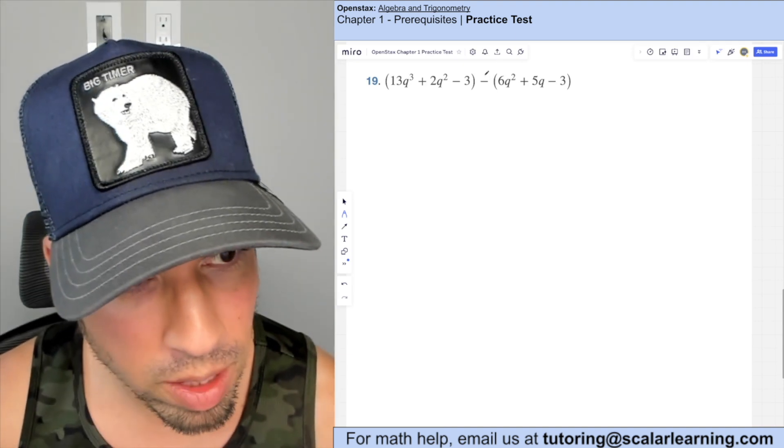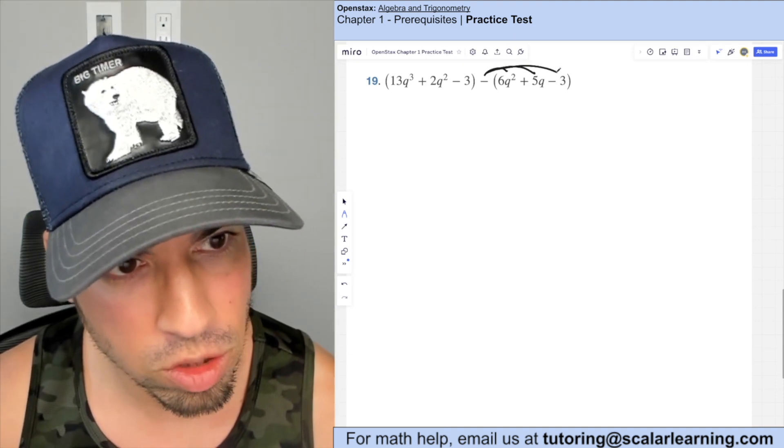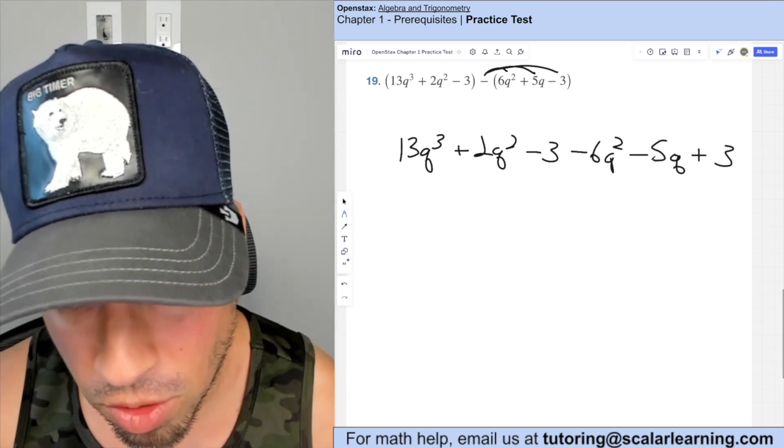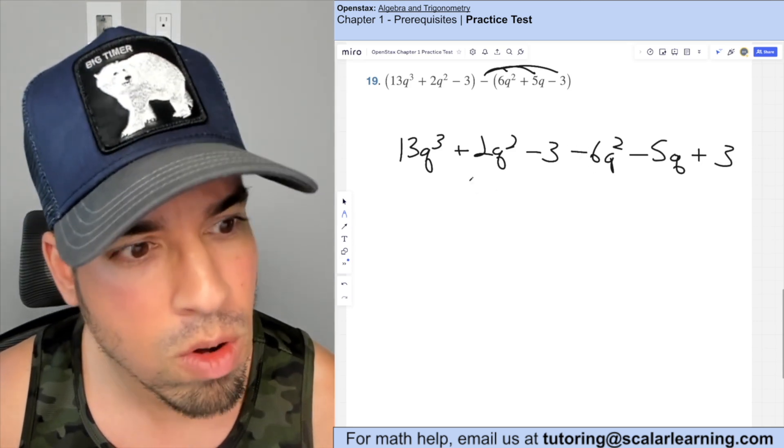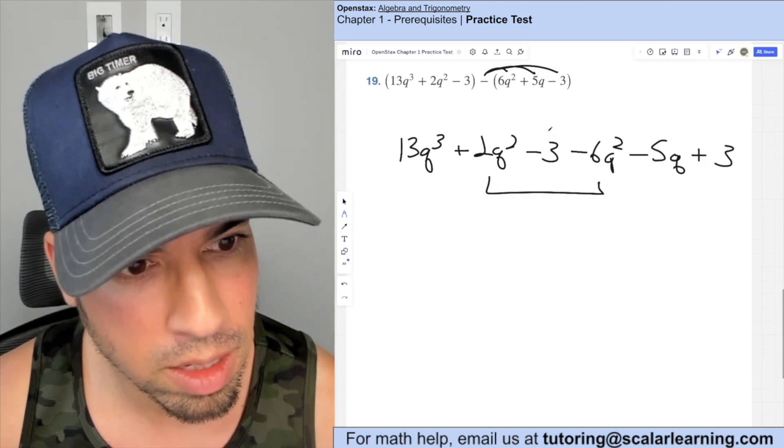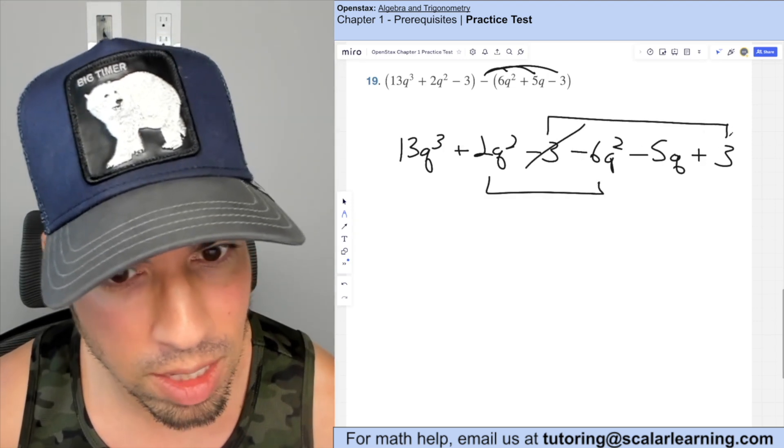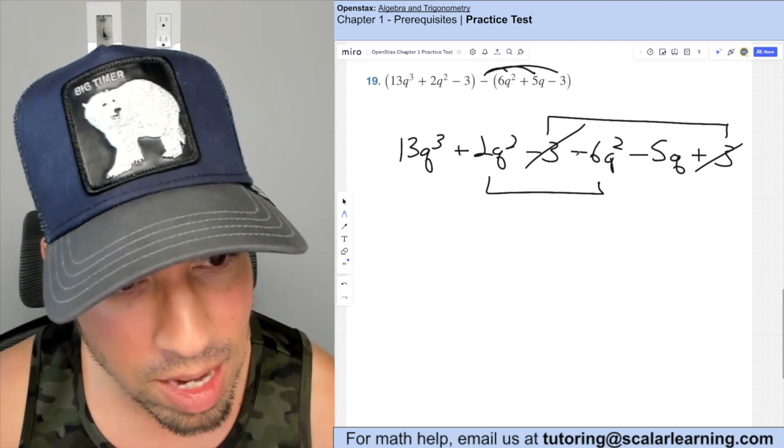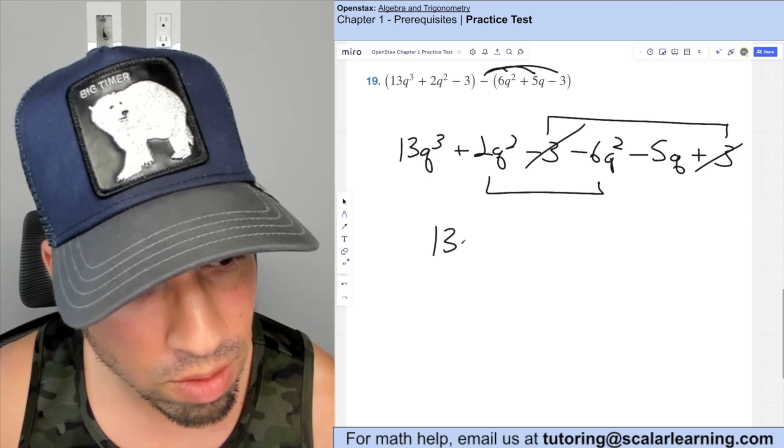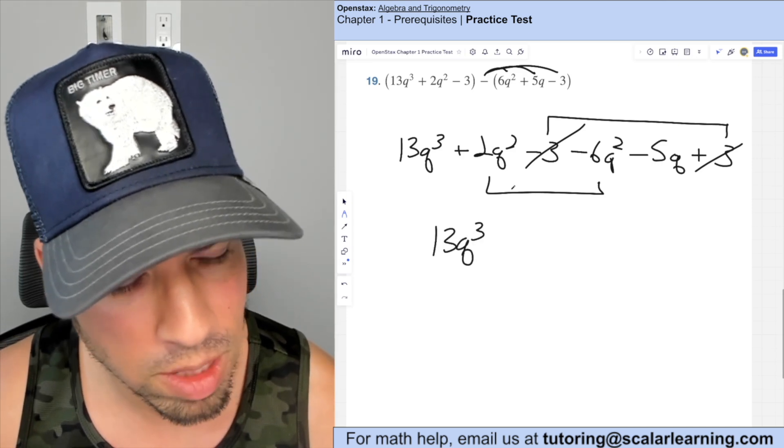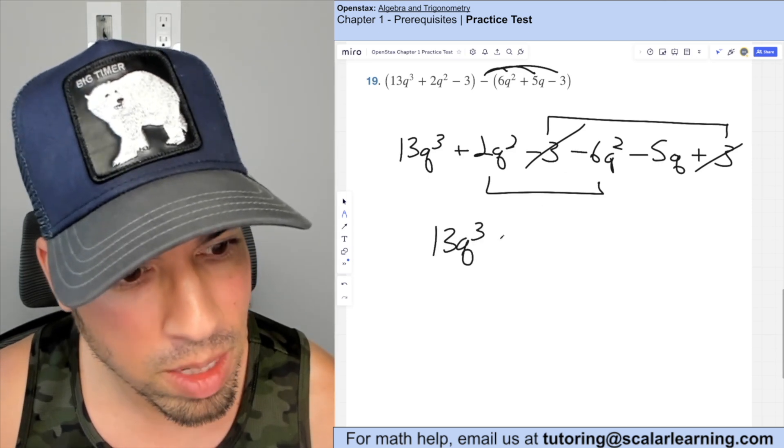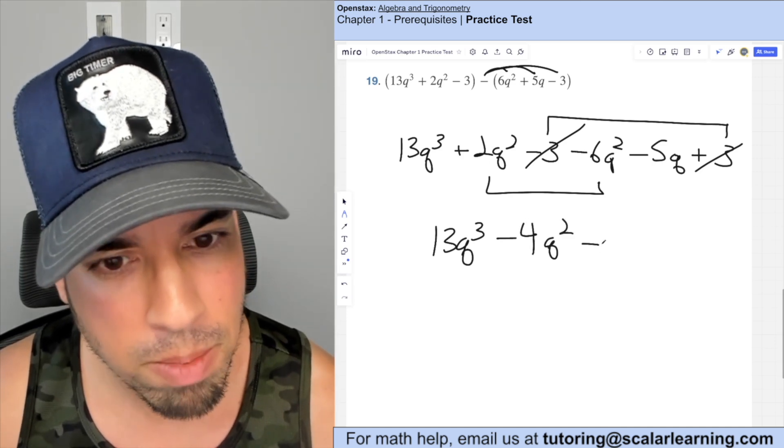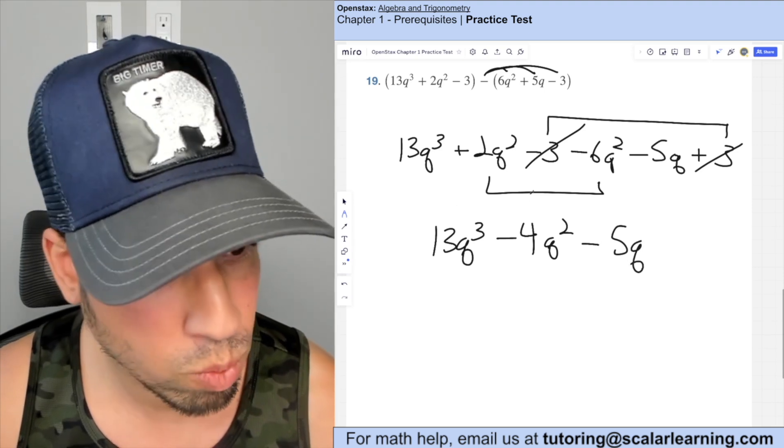Here before we begin, we're going to go ahead and distribute this minus sign like so. So you'll notice that the negative three became a positive three, this flipped to a minus five and et cetera. Now we're going to combine like terms. So the negative three and the positive three cancel out. And then this two q squared and six q squared negative combine. So again, we're left with 13 q cube that has no like terms. These guys combine to a minus four q squared, right two and negative six is negative four minus five q for the win.